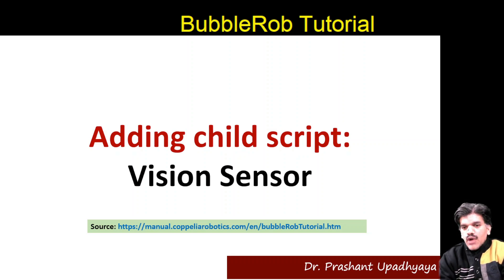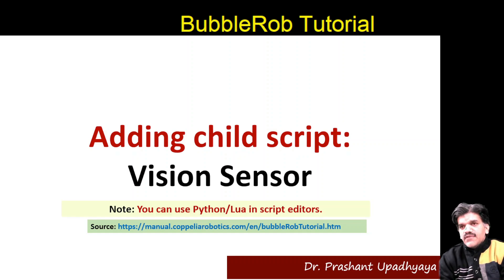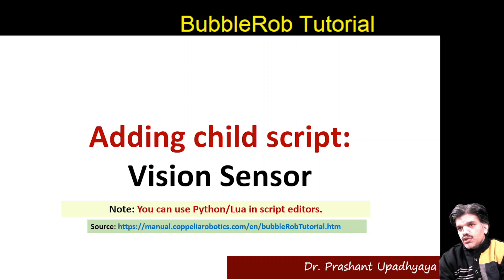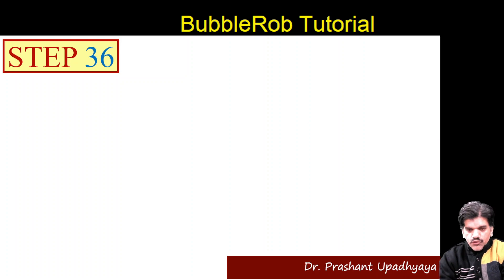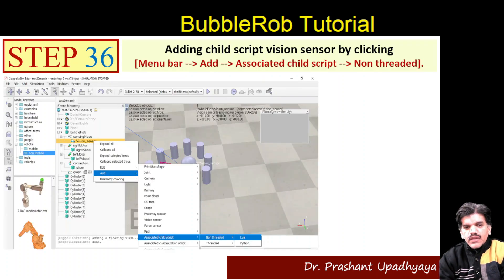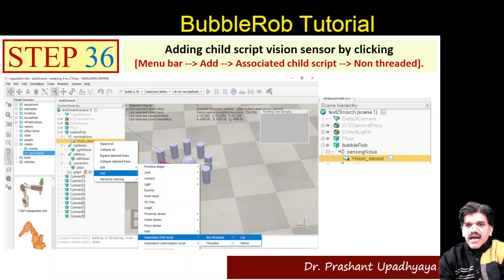We will add a child script to the vision sensor. In CoppeliaSim, two types of script editors are used: Python and Lua. We will use Lua here. When using Python, you need Python dependencies and libraries installed, but for Lua you don't need all that. To add it, go to the vision sensor, click Add, then Associated Child Script, select Non-threaded, and select Lua.